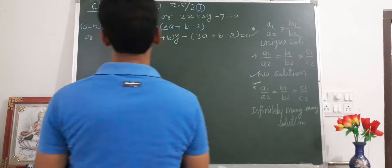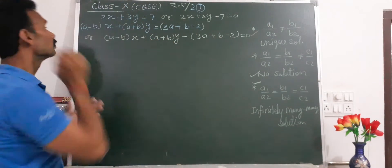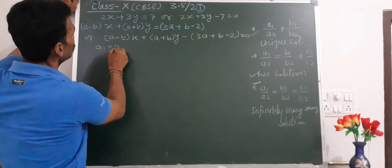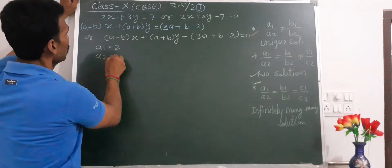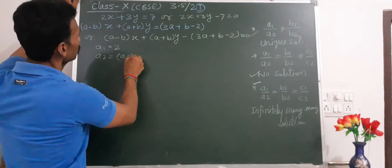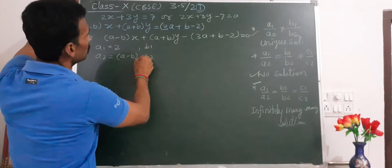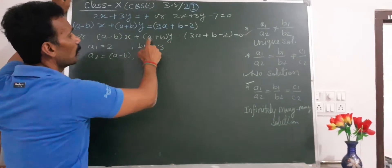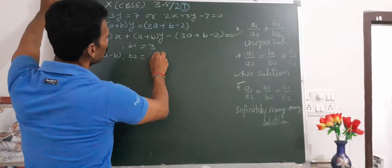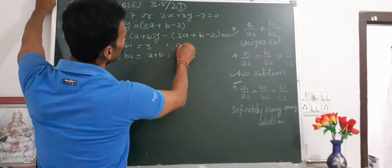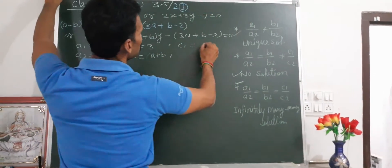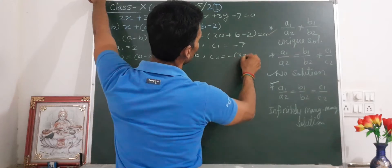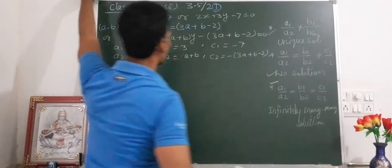Comparing the coefficients: A1 equals 2, A2 equals A minus B. B1 is the coefficient of y, which is 3, and B2 equals A plus B. The constant term C1 equals minus 7, and C2 equals minus (3A plus B minus 2).